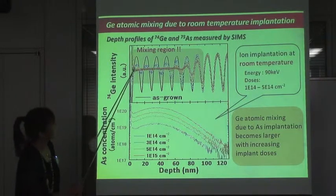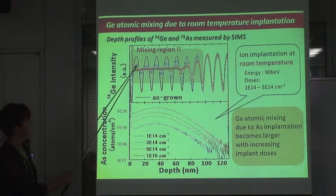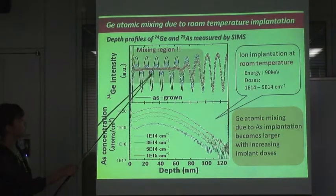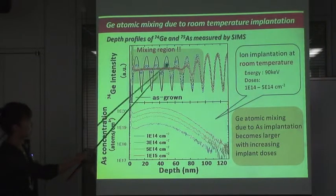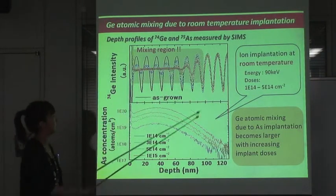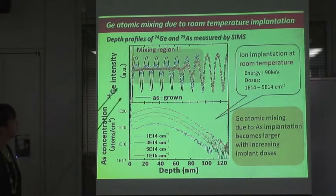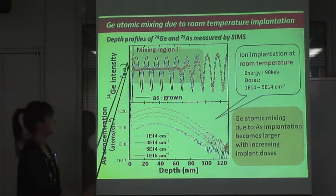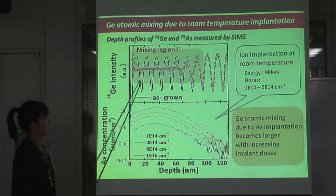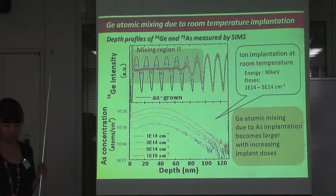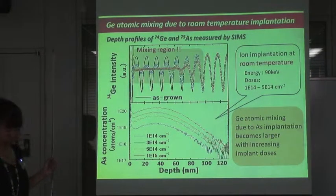The 1×10^14 sample shown with the blue line, which is the highest dose sample, is completely mixed in this region. So Germanium atomic mixing due to arsenic implantation becomes larger with increasing implant doses.